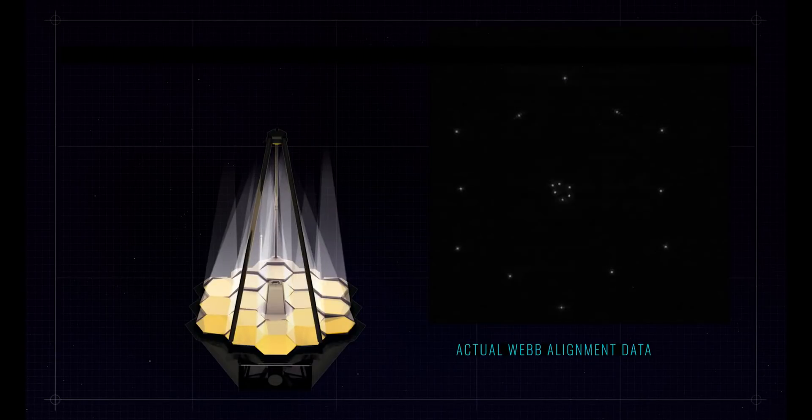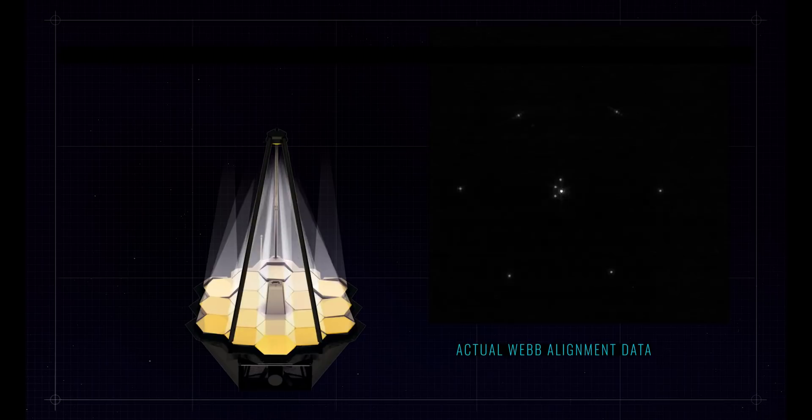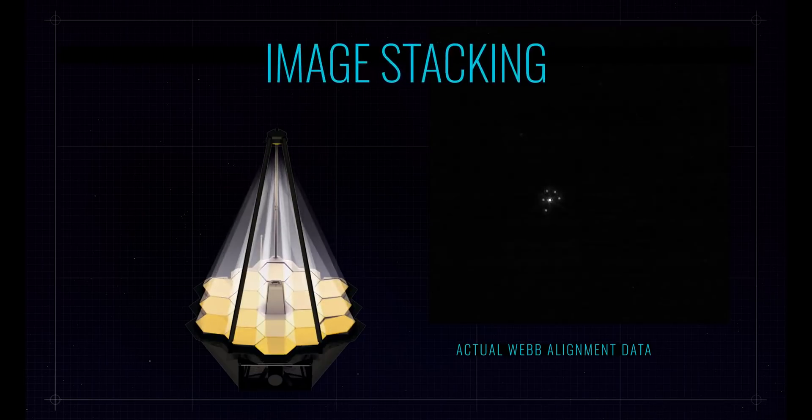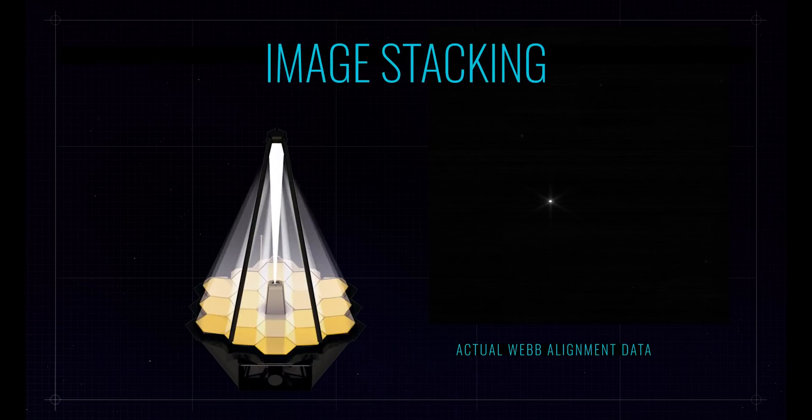We tilt the mirror segments to bring the light from each mirror so that it falls on top of each other at a common point in the middle of the detector. And we call that image stacking. And that concentrates all the light in a single place. But the segments themselves are not cooperating. They're not working together at that point. They're all their own individual telescope.